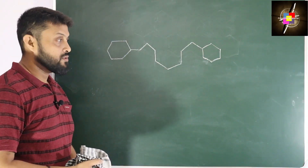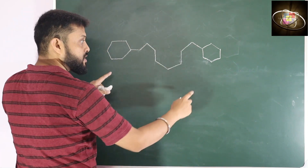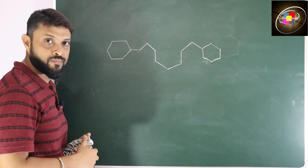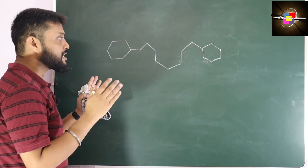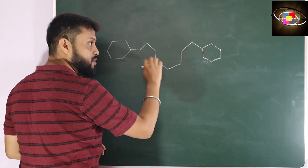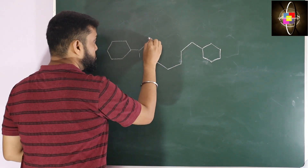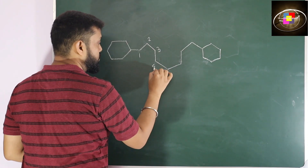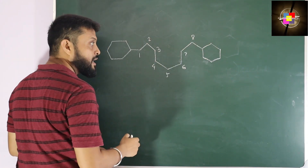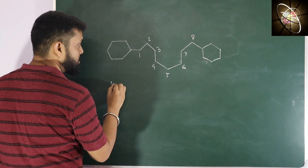Now in this compound, we have an aliphatic chain connected with two cyclic portions at its terminals. If we have this type of terminal cyclic portions, we always give priority to the aliphatic chain and consider it as the parental portion. The chain has 8 carbons, and we treat the cyclic portions as substitutions.